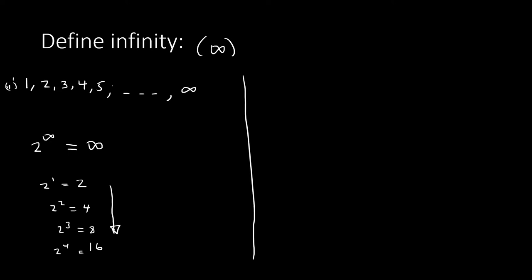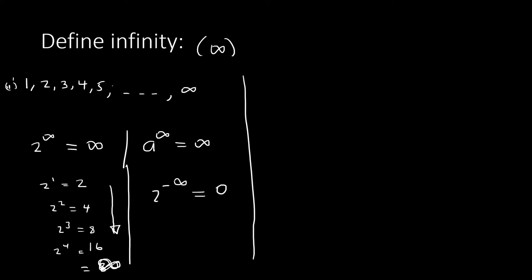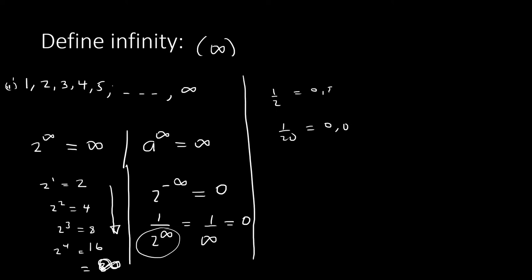Any number to the power of infinity is infinity. Now, 2 to the power of negative infinity equals zero, because it equals 1 over 2^∞, which is 1 over infinity. One over a very large number approaches zero — for instance, 1/2 = 0.5, 1/20 = 0.05, 1/200 = 0.005 — getting closer and closer to zero.